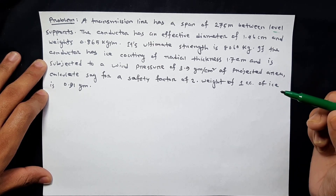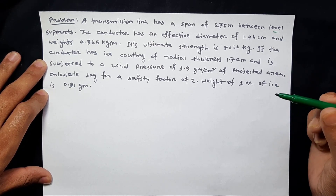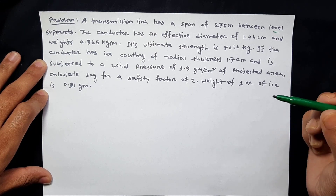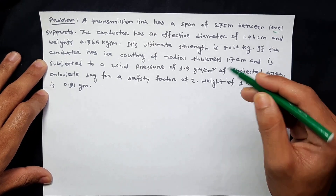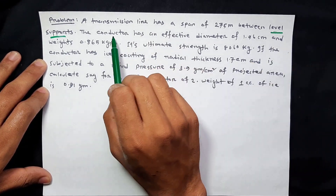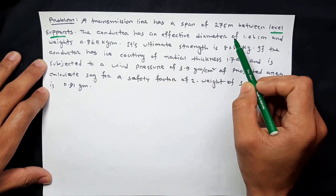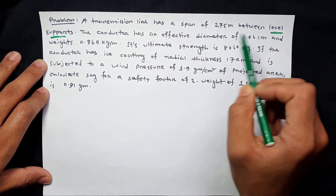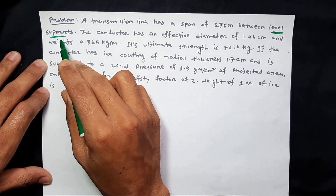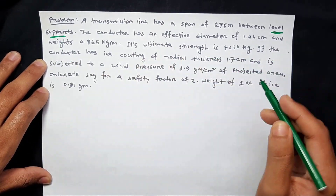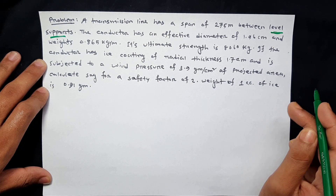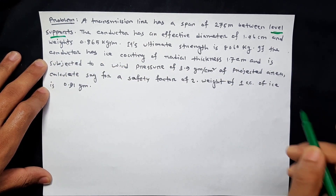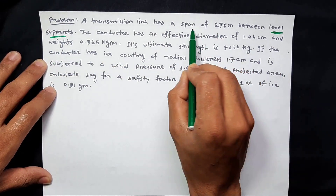This is the conductor OIT report. This is the ice-tutor effect. This transmission line has a span between levels of support, meaning the support is at equal level. That means this is an equal-level related problem. This is the span length.